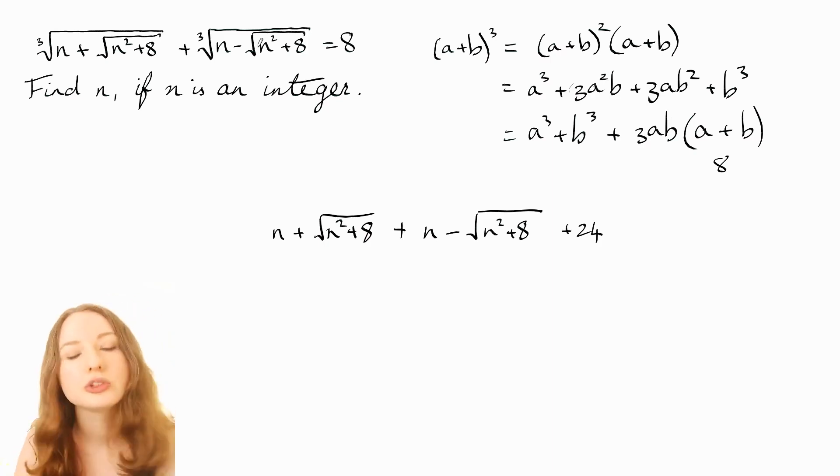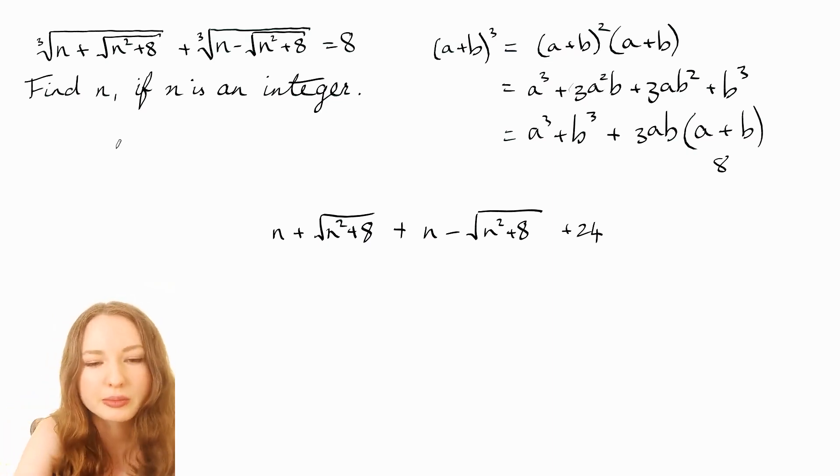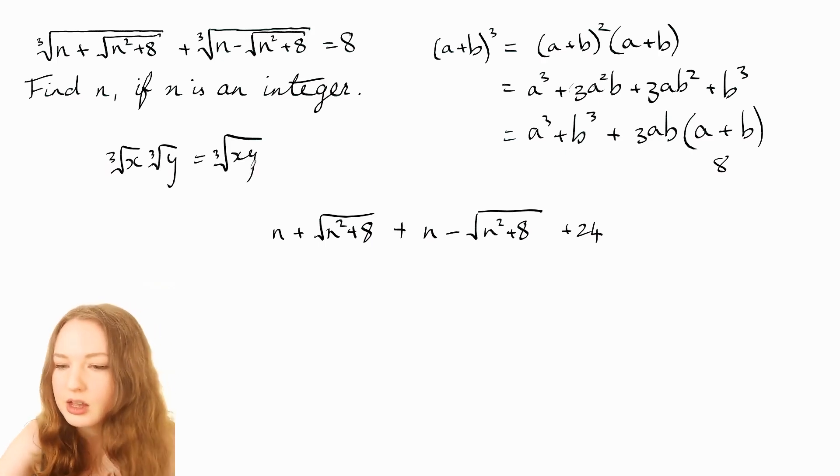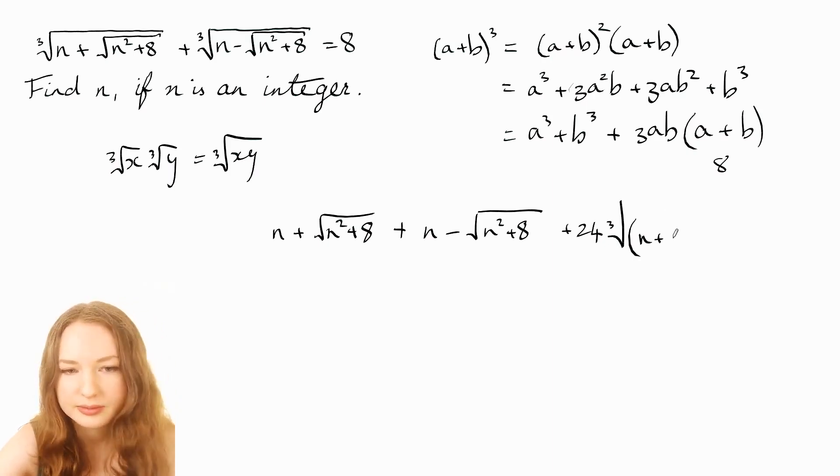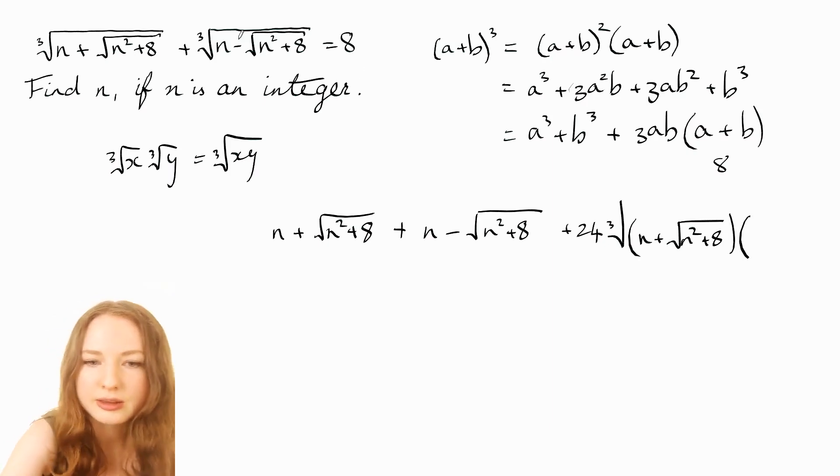Now what we can do if you've got cube root of something times cube root of something else you can just combine them both into the same thing, you know, like if you've got ³√x times ³√y you can turn that into ³√(xy).